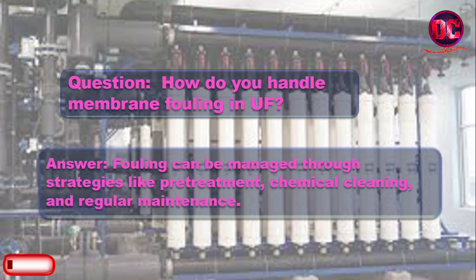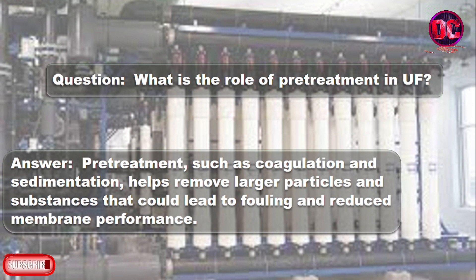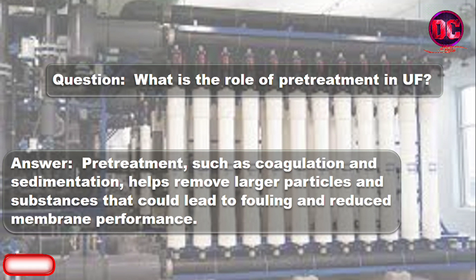How do you handle membrane fouling in UF? Fouling can be managed through strategies like pretreatment, chemical cleaning, and regular maintenance. What is the role of pretreatment in UF? Pretreatment, such as coagulation and sedimentation, helps remove larger particles and substances that could lead to fouling and reduced membrane performance.